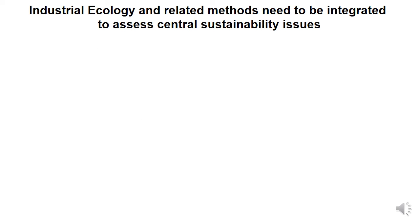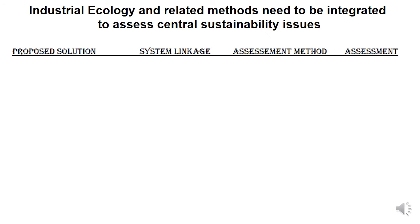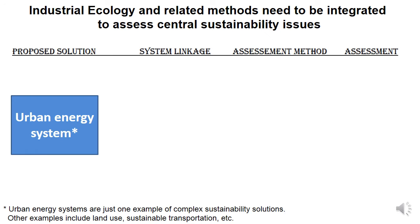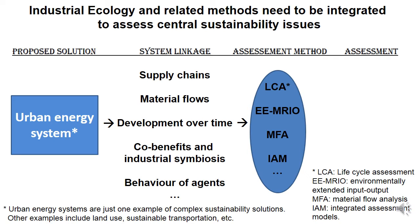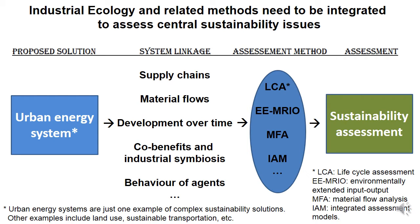Industrial ecology and related methods need to be integrated to assess central sustainability issues. If we take a proposed solution like urban energy systems, we want to come up with a comprehensive sustainability assessment regarding what technologies to deploy at what scale and how to redesign the system. We need to study system linkages like supply chain material flows, and we do this with established assessment methods like life cycle assessment, input-output analysis, and material flow analysis.